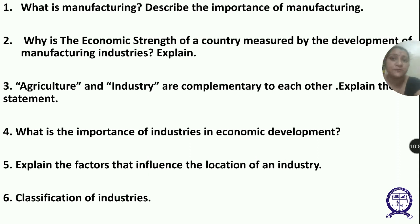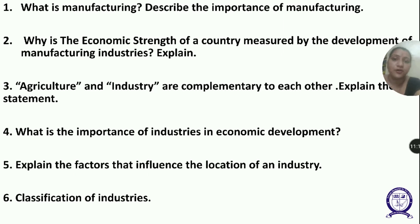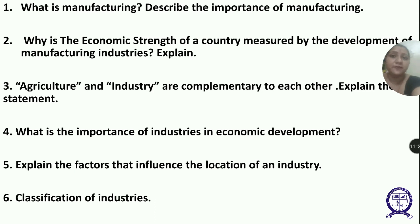The fourth type of ownership is cooperative sector industry — owned by producers or suppliers of raw material, workers, or both. They pool resources and share profits or losses proportionately. Examples include the sugar industry in Maharashtra and the coir industry in Kerala. In cooperatives, both investments and losses are shared cooperatively.